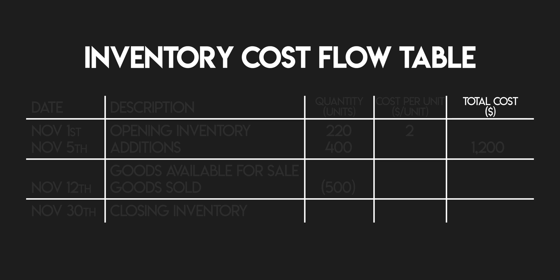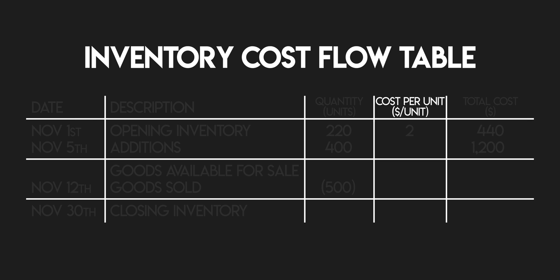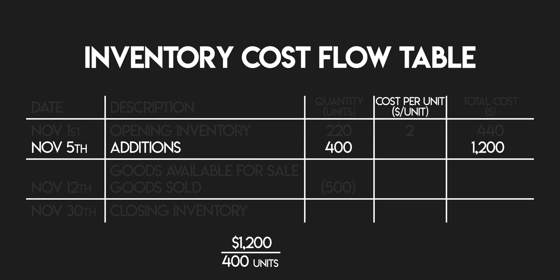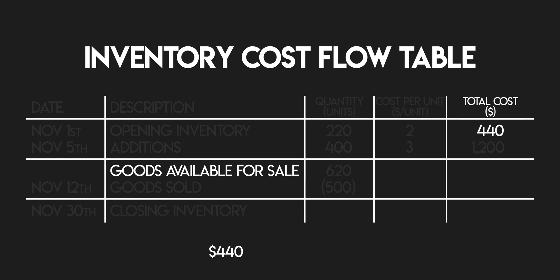Step three: we need to fill in the blanks. We'll begin by calculating the total cost of your opening inventory. You kicked off the month with 220 units at $2 per unit — 220 multiplied by $2 is $440. Next, the cost per unit of your additions: you bought 400 units for $1,200 total, so $1,200 divided by 400 units is $3 per unit. Now we can take subtotals for goods available for sale: 220 plus 400 is 620 units, and $440 plus $1,200 is $1,640 — your total cost of goods available for sale.